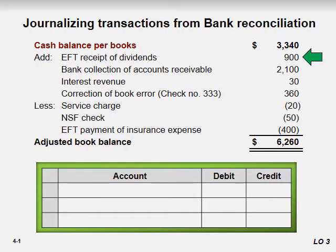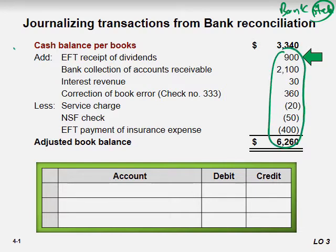Since we already made our bank reconciliation, we cannot make entries on the bank statement or bank account because the bank has their own system — they will adjust and send us the bank statement. All we have to do is adjust the transactions into our books. We are responsible for our books, not the bank's system. So we will adjust entries related to our books.